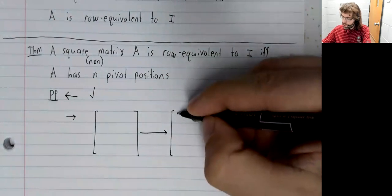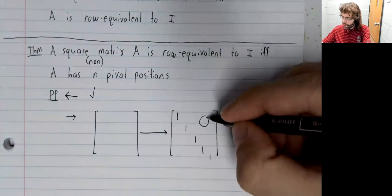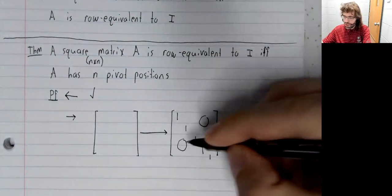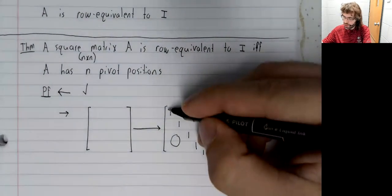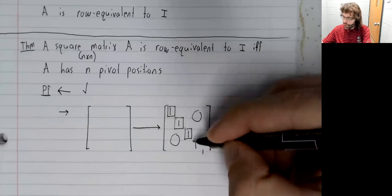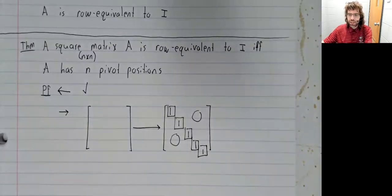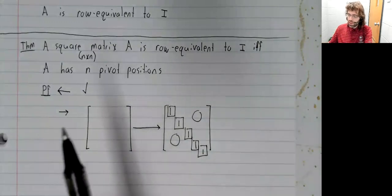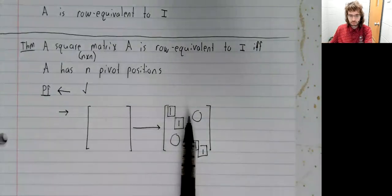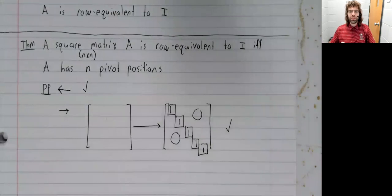If Gauss-Jordan elimination gives us the identity matrix, these ones down the diagonal are pivot positions, and an n by n matrix has n pivot positions. Therefore, if A is row equivalent to I, it has n pivot positions.